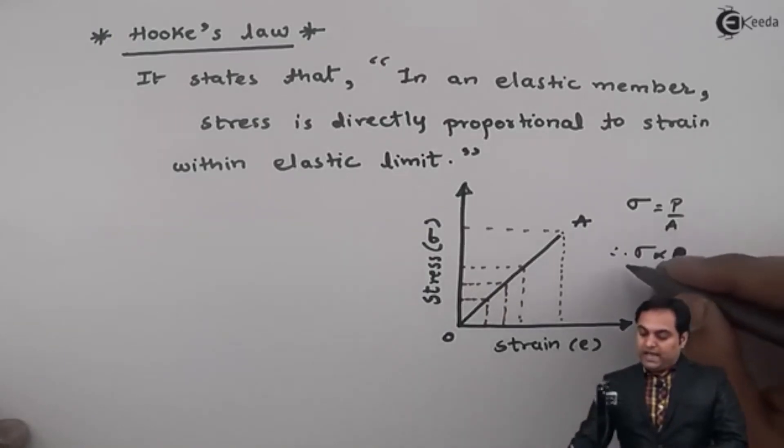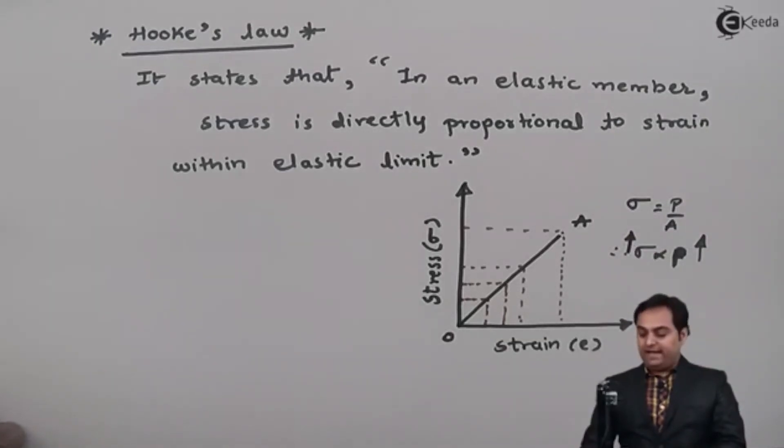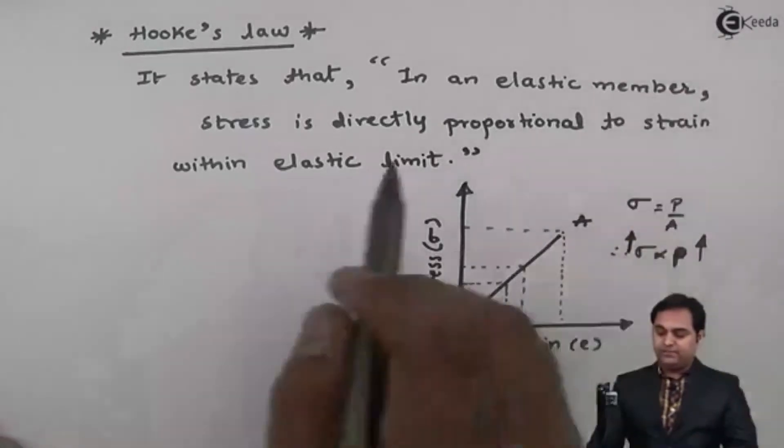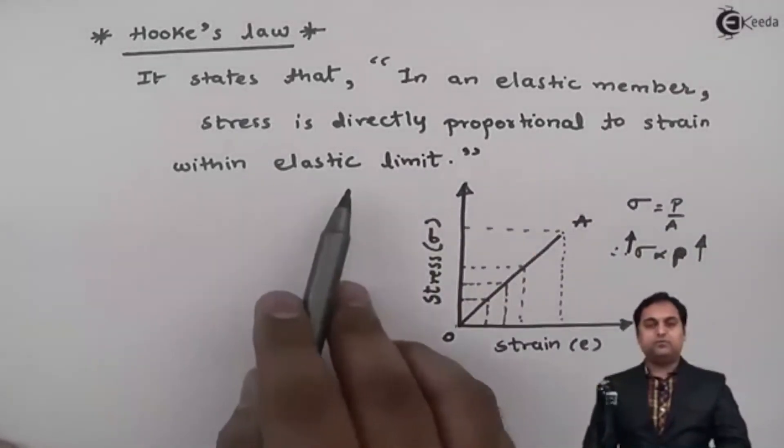So now when I want to increase the stress at that time I will have to increase the load on the member. So if the load increases, stress value will go on increasing and when I am increasing the stress at the same time strain increases. So this is Hooke's law: in an elastic member stress is directly proportional to strain.